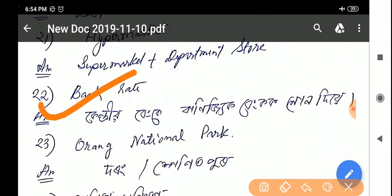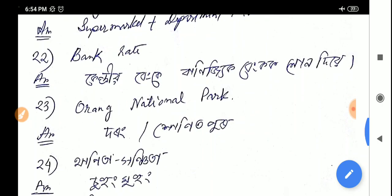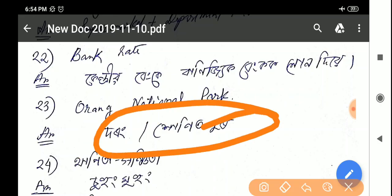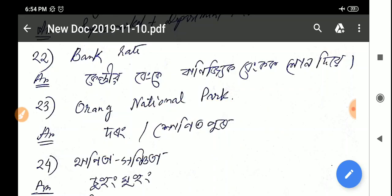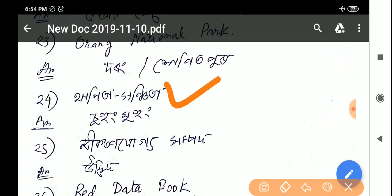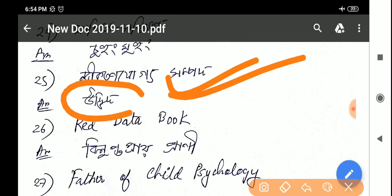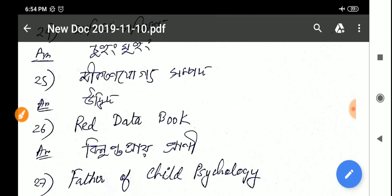There's a question about the central bank - this is RBI, the Reserve Bank of India. Another question about national parks - the answer is Orang and Nameri in Assam. These are common questions we've already discussed in previous classes.